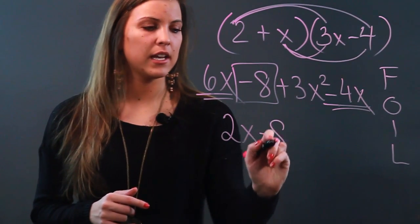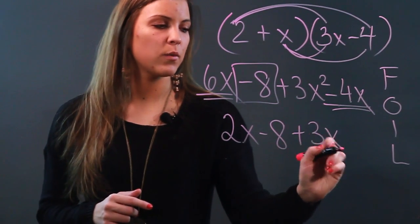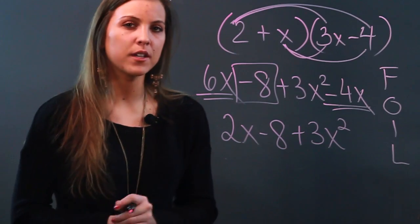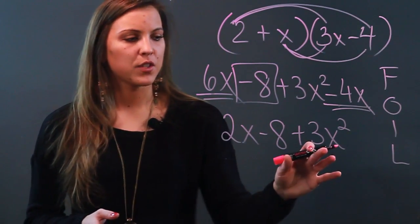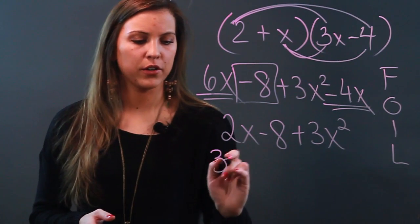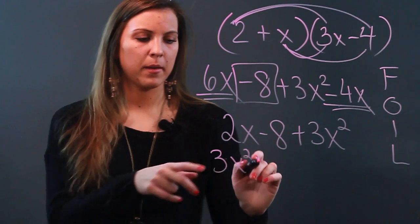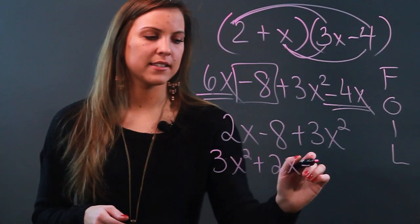I'm going to bring down my minus 8, bring down my plus 3x squared. And then I'm almost done. I just want to write this in descending order because that's the standard way that polynomials are written. So I'm going to take this 3x squared and write it first. Then I'm going to write my positive 2x. And lastly, I'm going to write my minus 8.